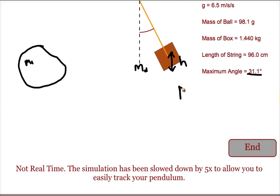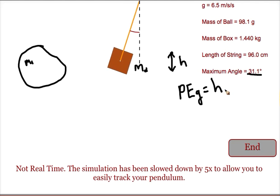Once we have that height we can figure out the potential energy due to gravity that was achieved by the box and the ball. That'll be the height, the gravitational field, and the mass.